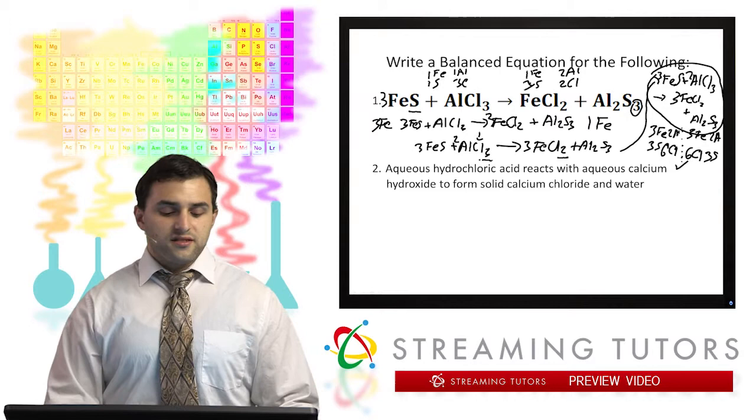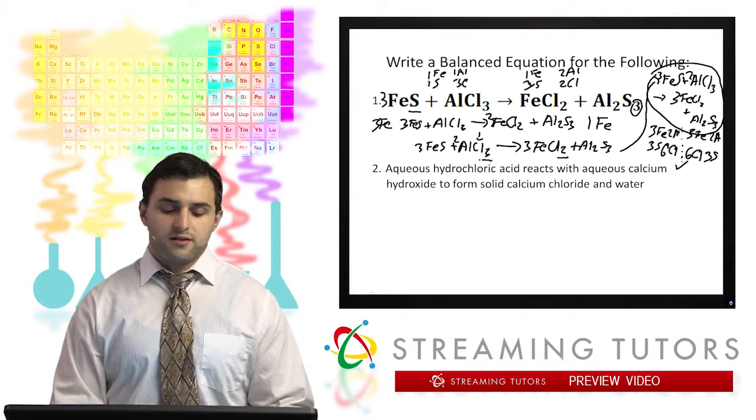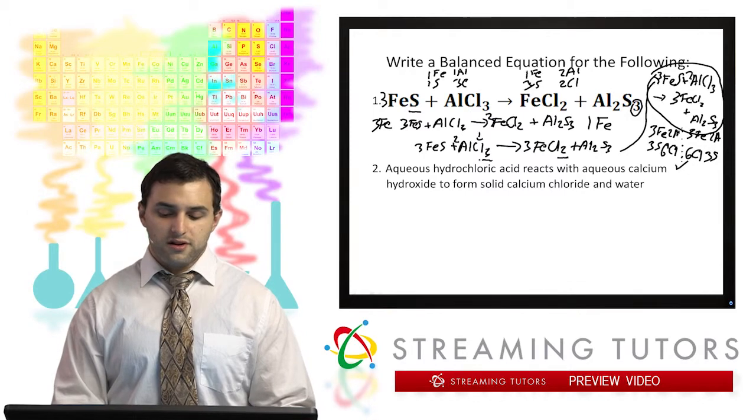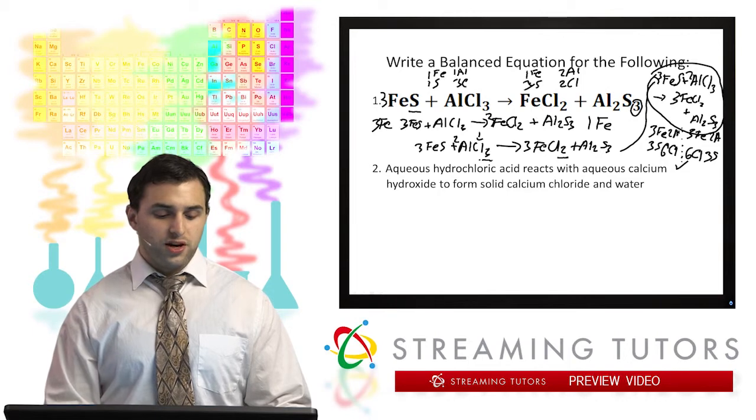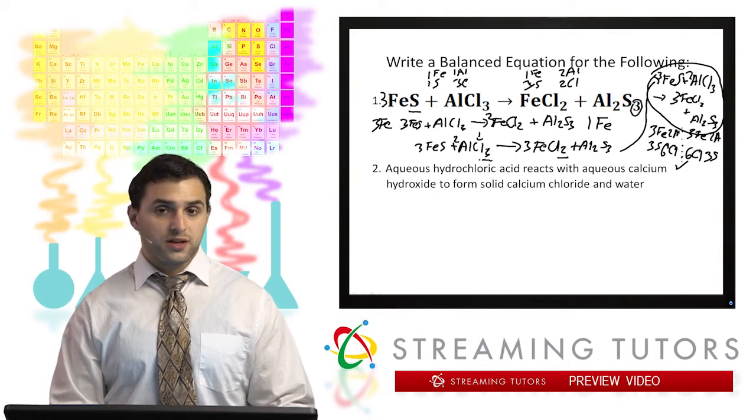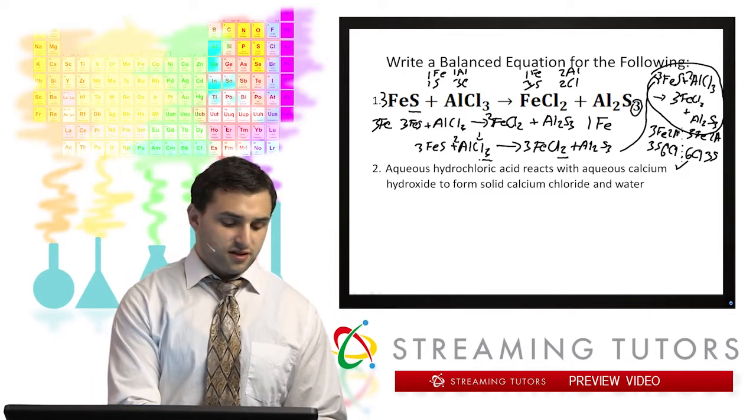Okay. Now for the second one, it says aqueous hydrochloric acid reacts with aqueous calcium hydroxide to form solid calcium chloride and water. So we would need to first write out the chemical equation based on the words and names we're given. And that's pretty easy to do with our naming system. Just going to turn out to this.